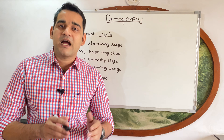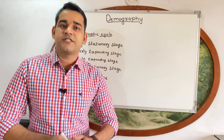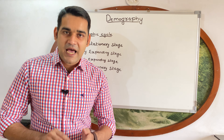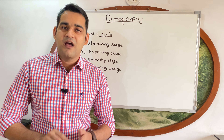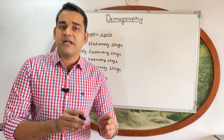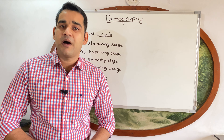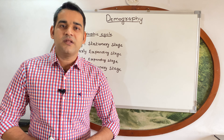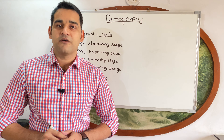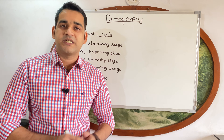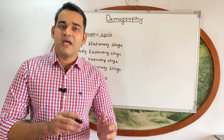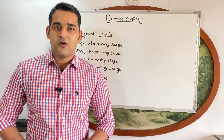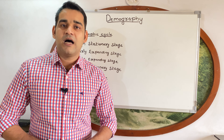So demography can be defined as the study of a country's population in terms of four things: size, composition, behavior, and distribution. That is the simple definition of demography.